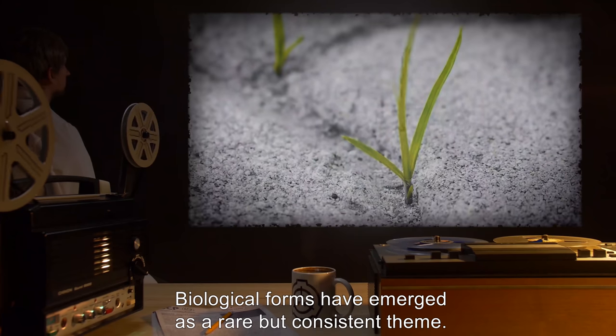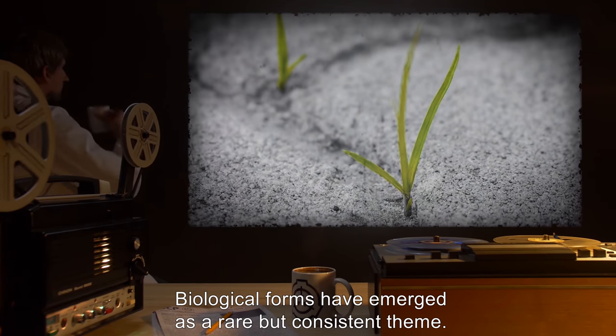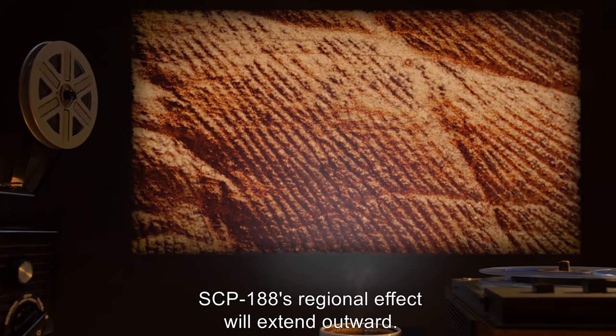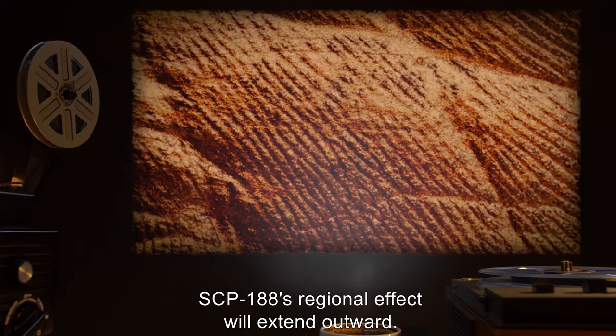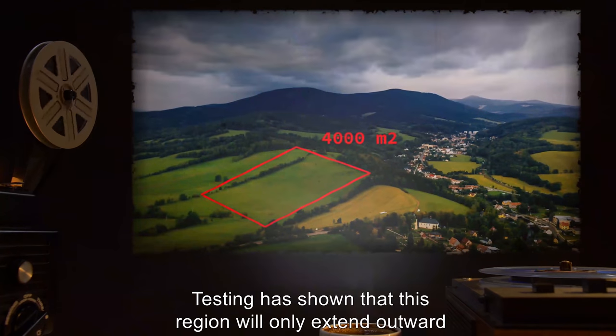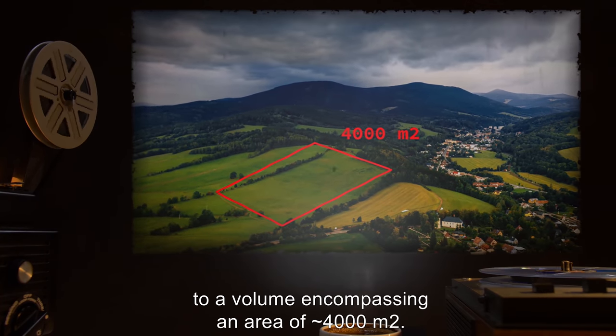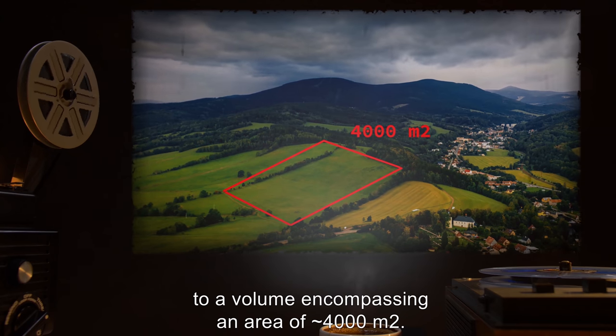Biological forms have emerged as a rare but consistent theme. As the environment around it is manipulated, SCP-188's regional effect will extend outward. Testing has shown that this region will only extend outward to a volume encompassing an area of roughly 4,000 meters squared.